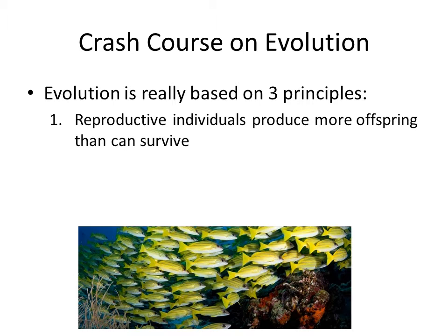Evolution is actually a fairly simple principle. It's theoretically possible that people could have come up with the principles that drive evolution fairly early in human history. There's probably a good indication that ideas of evolution were floating around for a long time, but they're not really codified into one coherent idea until about the time of Darwin and Wallace. Darwin and Wallace should both be considered the fathers of modern evolutionary theory, as both of them came up with the structures and functions that give rise to evolution at about the same time.